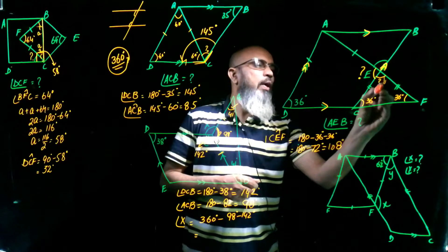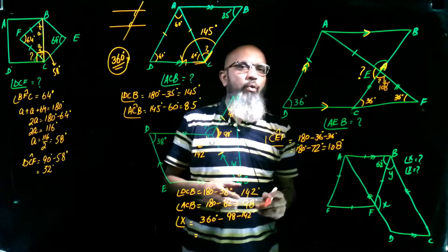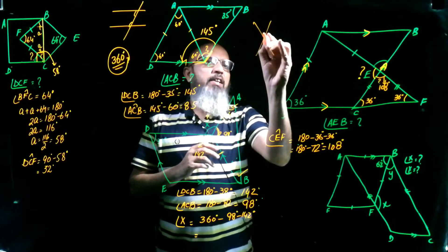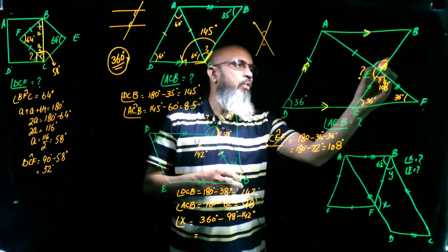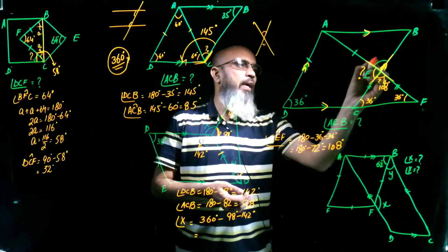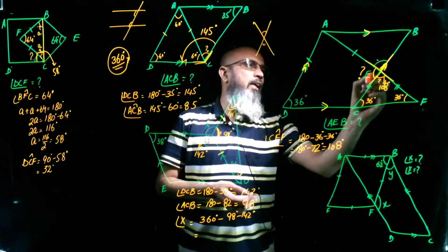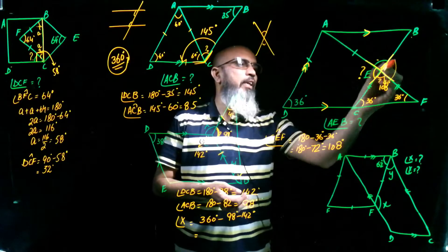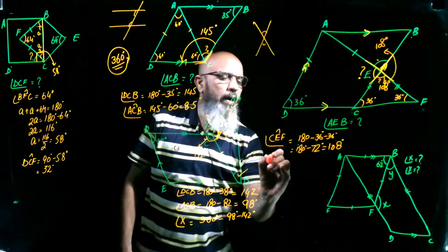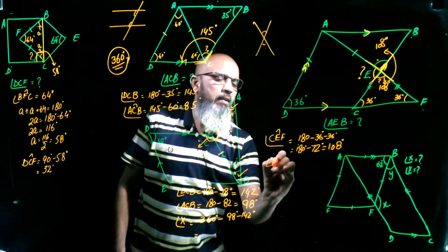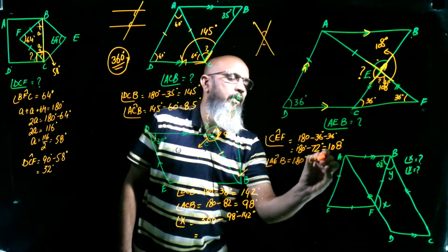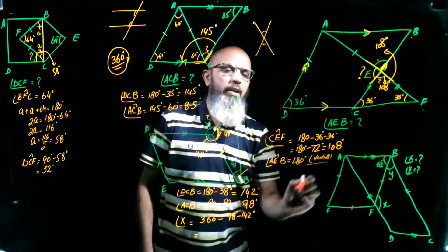Vertical opposite angles are equal. Angle AEB and angle CEF are vertical opposite angles, so angle AEB = 108 degrees. That is the required answer.